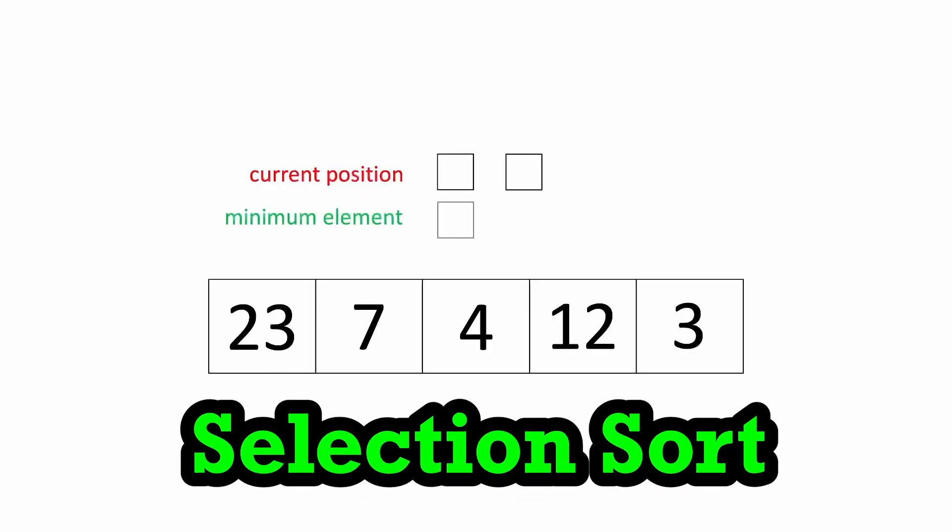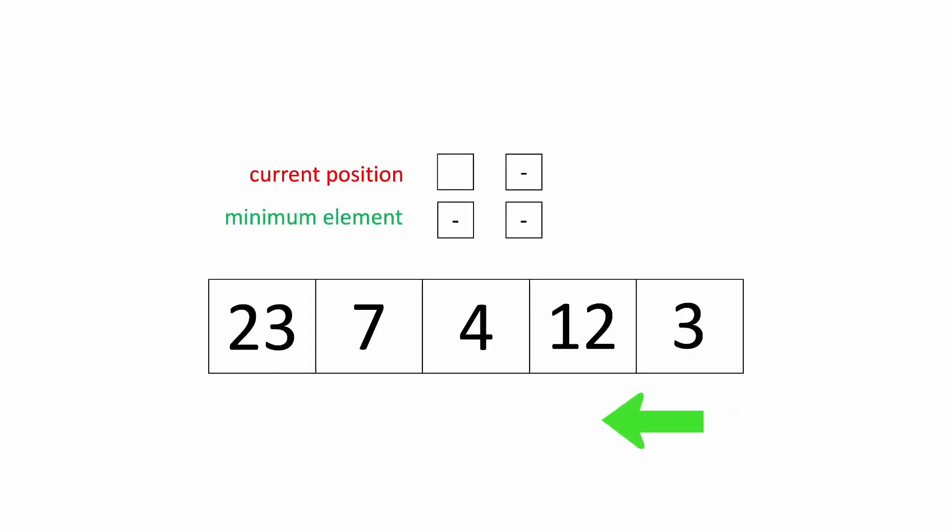Let's begin understanding selection sort. The idea is to move the minimum element through each iteration of this array to the beginning or left side of this array.